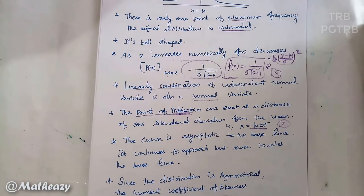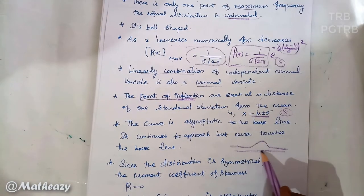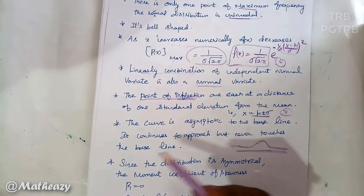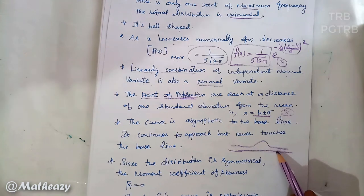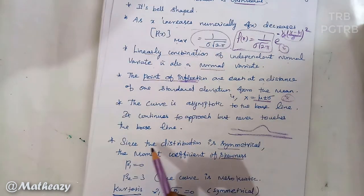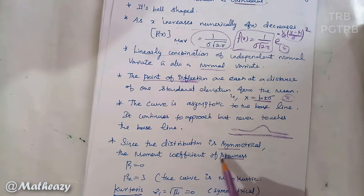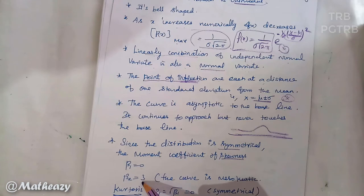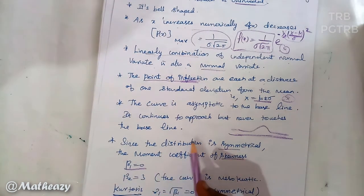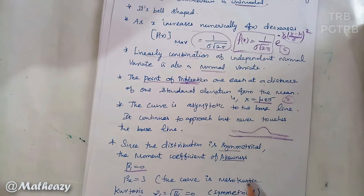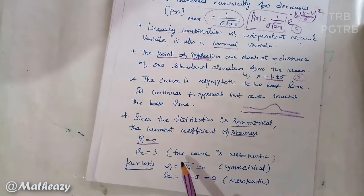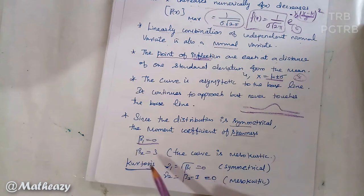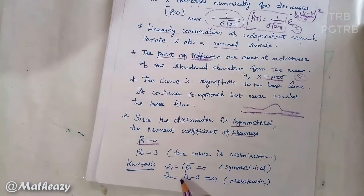The curve is asymptotic to the base line — it continuously approaches but never touches the base line. Since the distribution is symmetrical, the moment coefficient of skewness beta-1 equals 0, and beta-2 equals 3. From these: gamma-1 = √(beta-1) = 0, and gamma-2 = beta-2 − 3 = 3 − 3 = 0, confirming zero skewness and mesokurtic distribution.